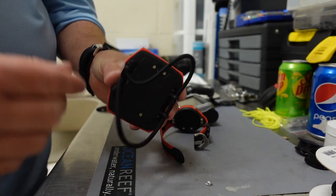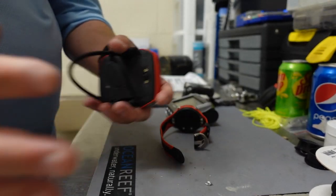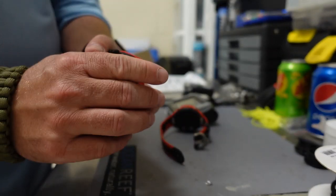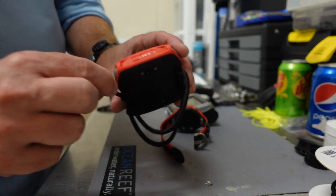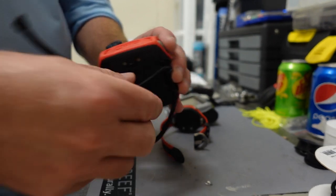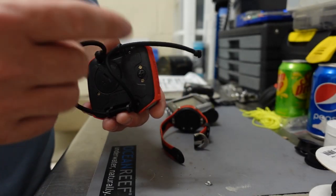And not only is it depth-compensating, meaning as my suit compresses, this is going to get tighter and vice versa, but it's also adjustable. If I need to tighten it up, all I've got to do is pull here on one of the ends, tie that knot, and now it's adjustable in that sense.